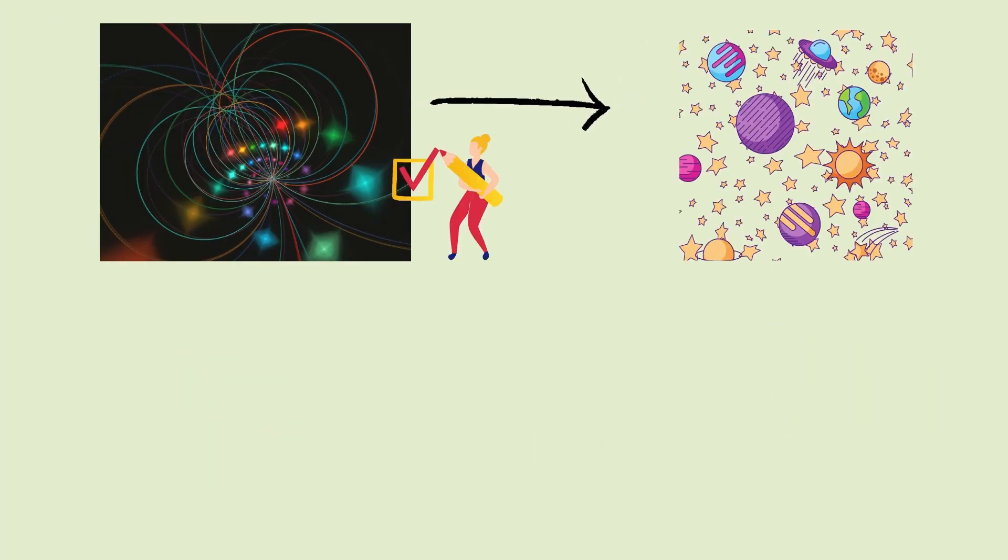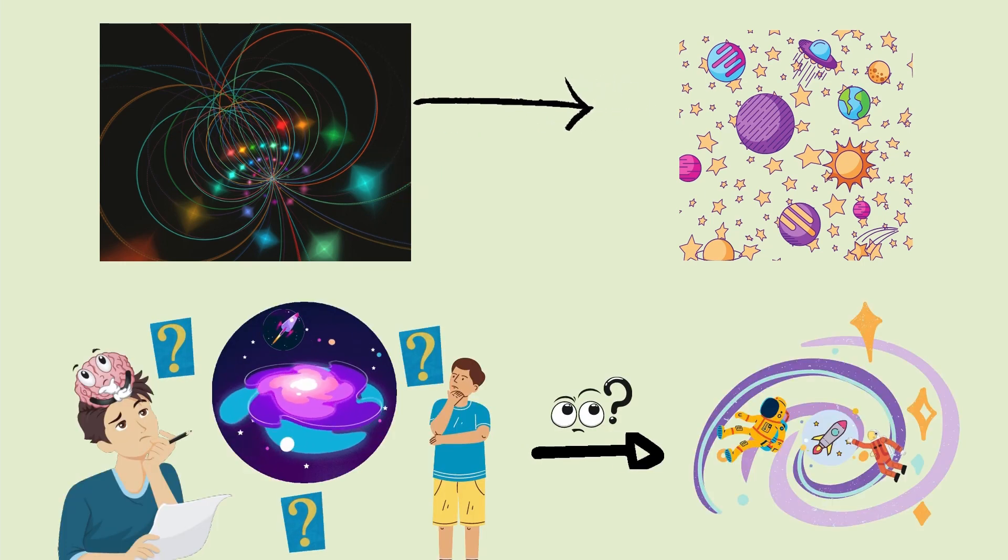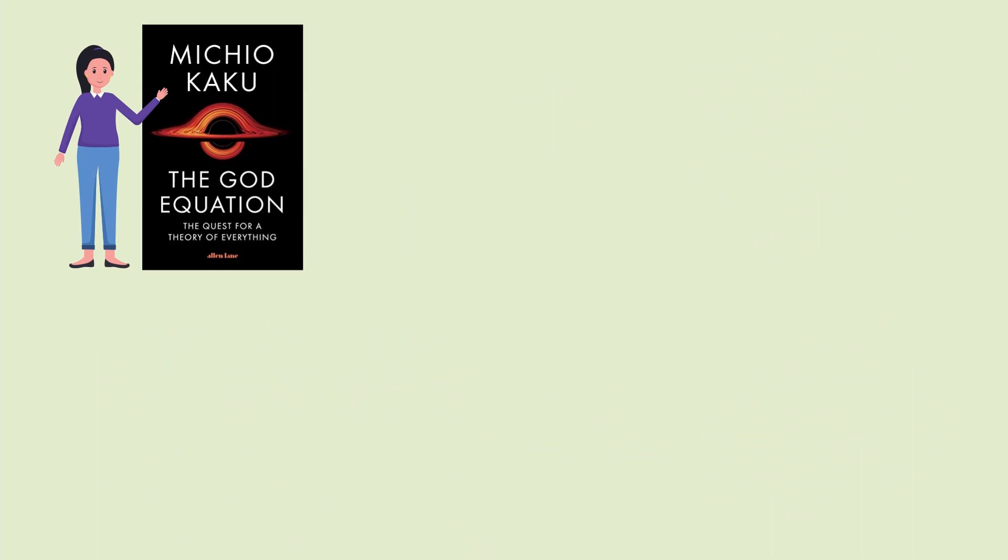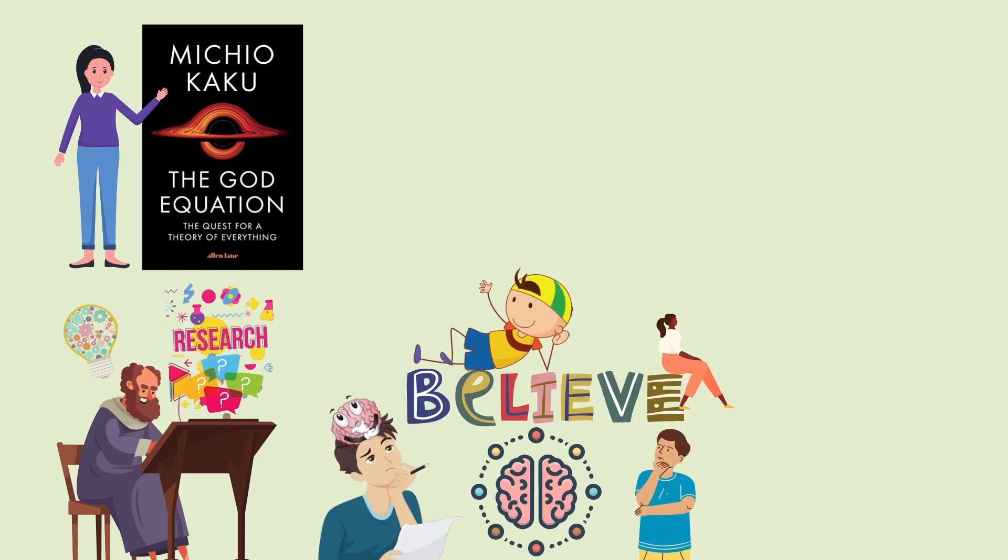String theory says that there should be a multiverse of universes, so why are we inhabiting this universe and not another? In the book The God Equation, the quest for a theory of everything, Dr. Michio Kaku had questioned many theories that we tend to believe.